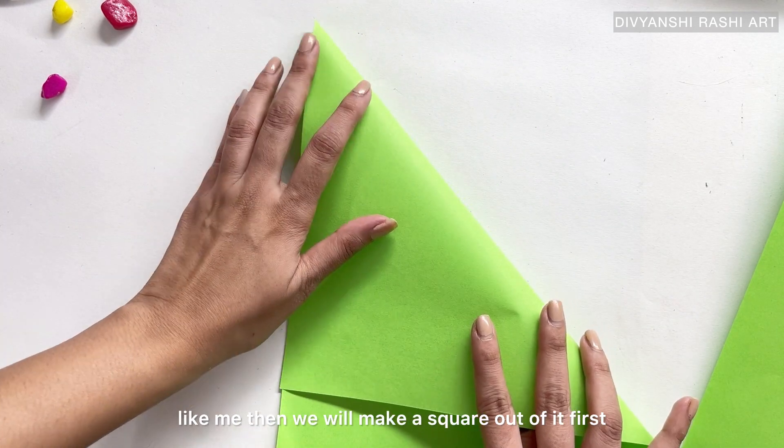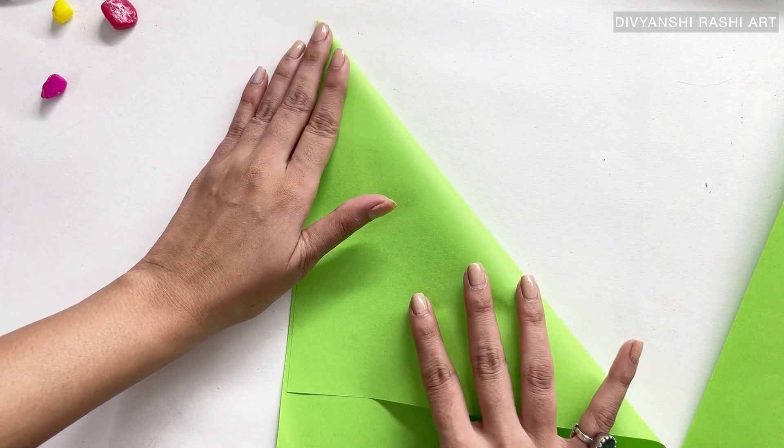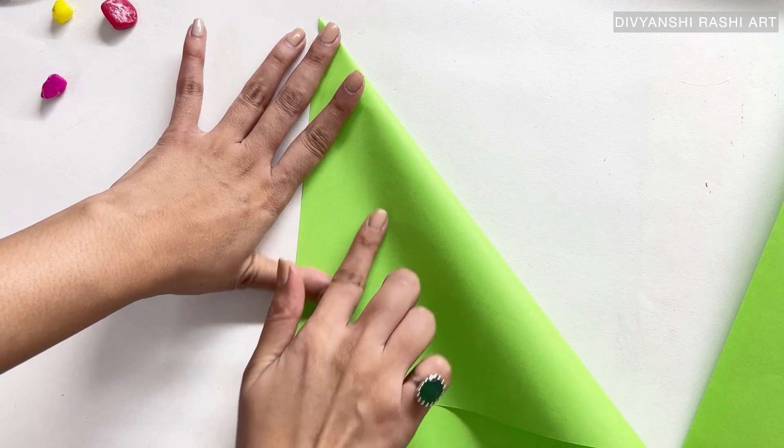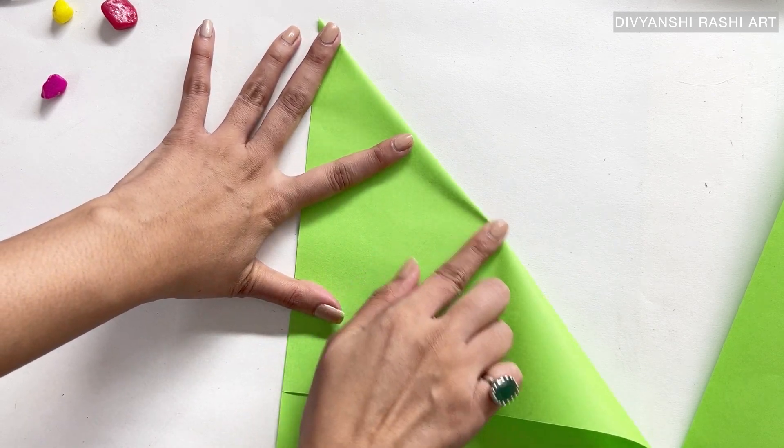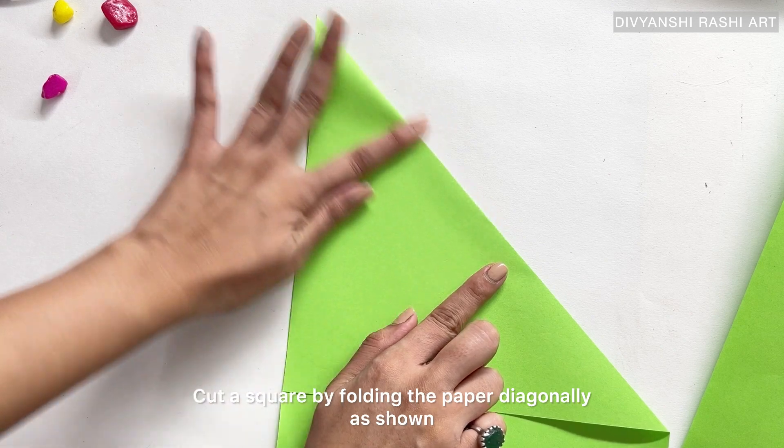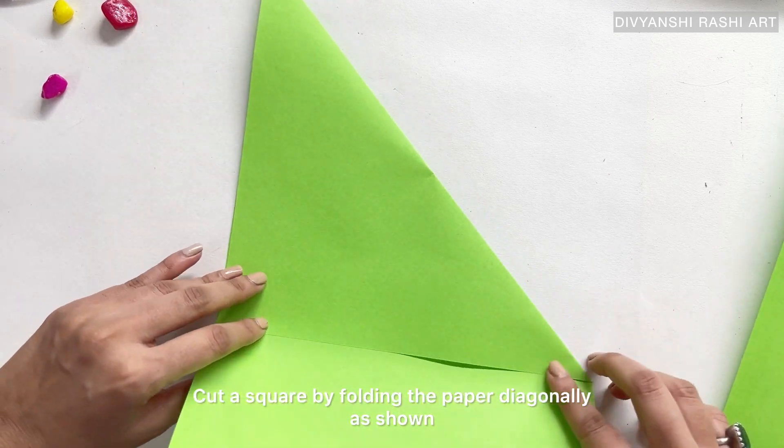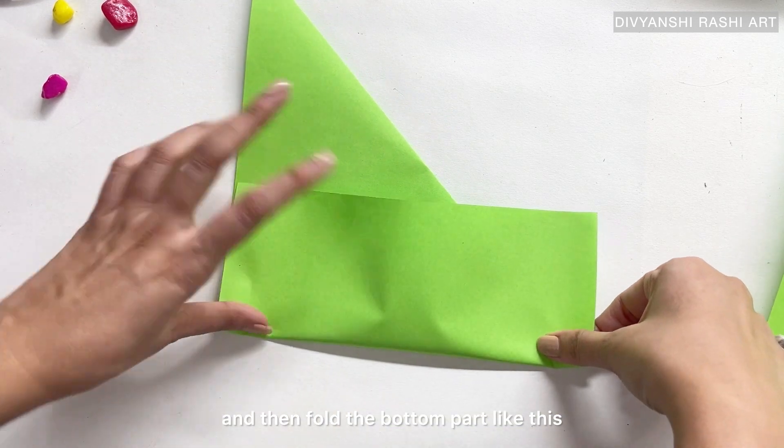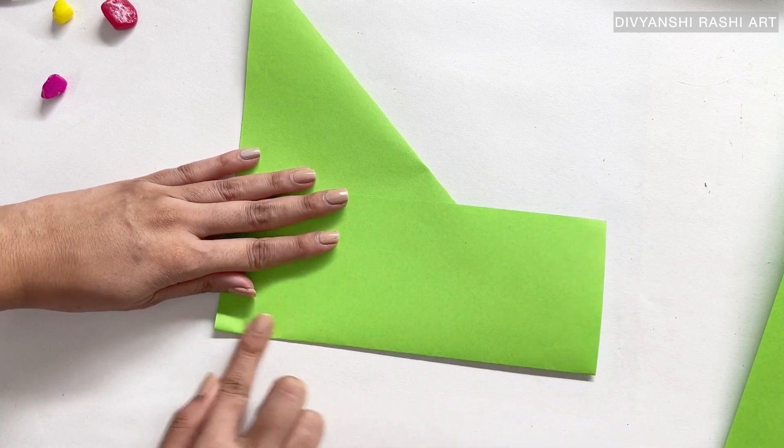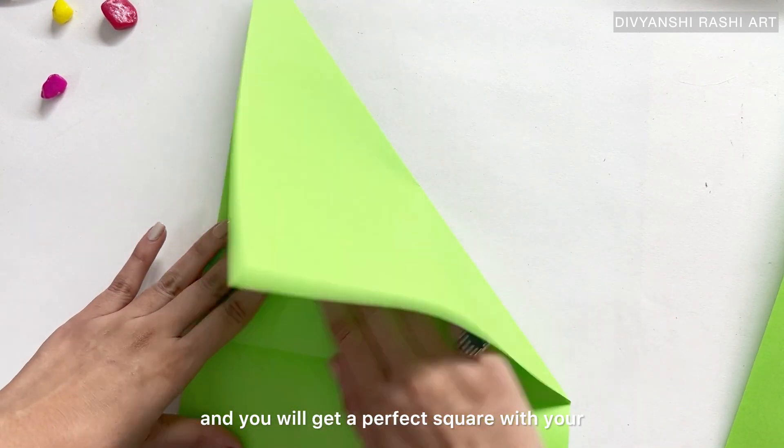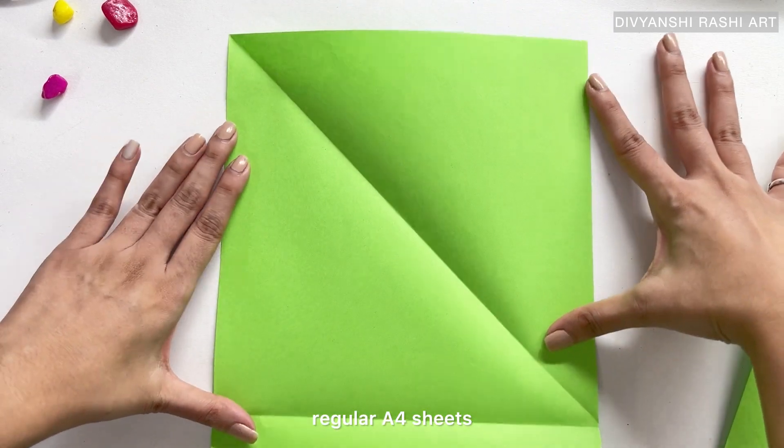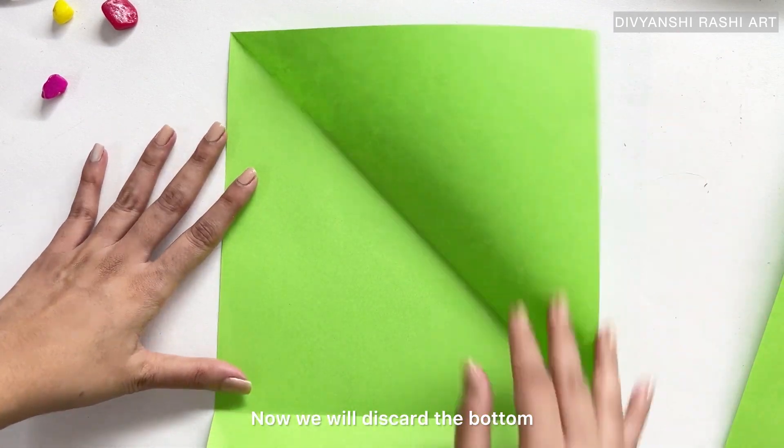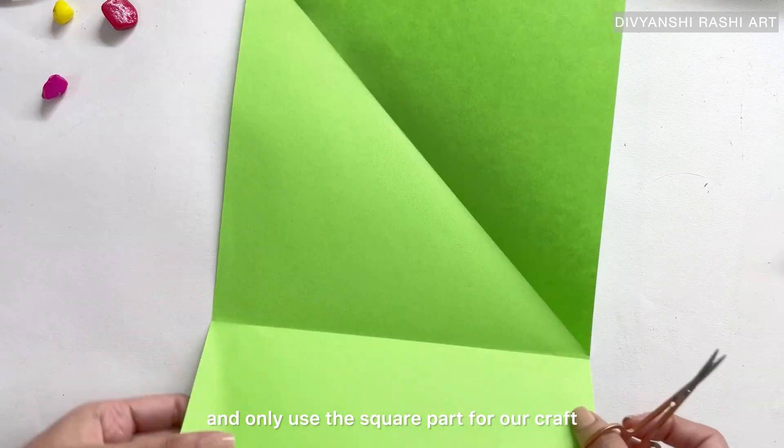But if you have an A4 size rectangular sheet like me, then we will make a square out of it first. Cut a square by folding the paper diagonally as shown, and then fold the bottom part like this. Now open the folds and you will get a perfect square with your regular A4 sheets. We will discard the bottom and only use the square part for our craft.